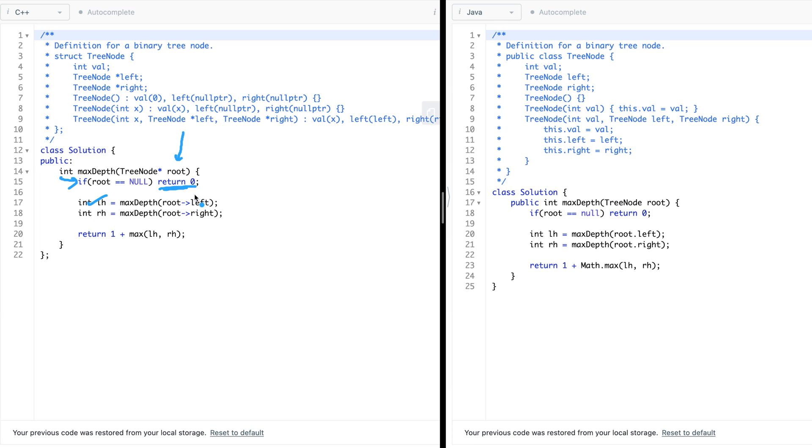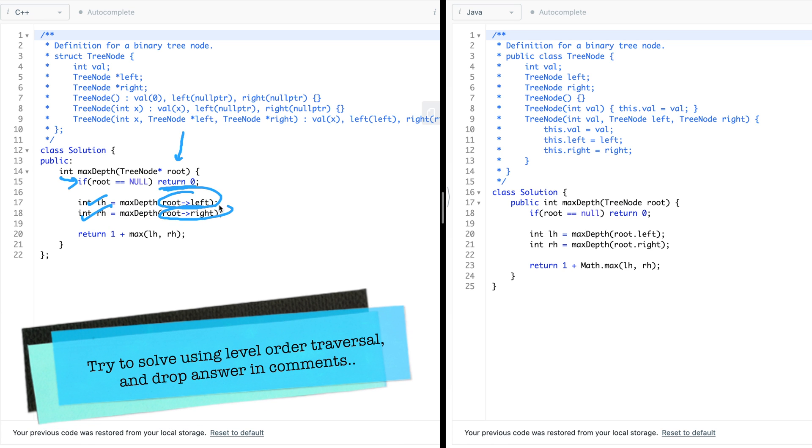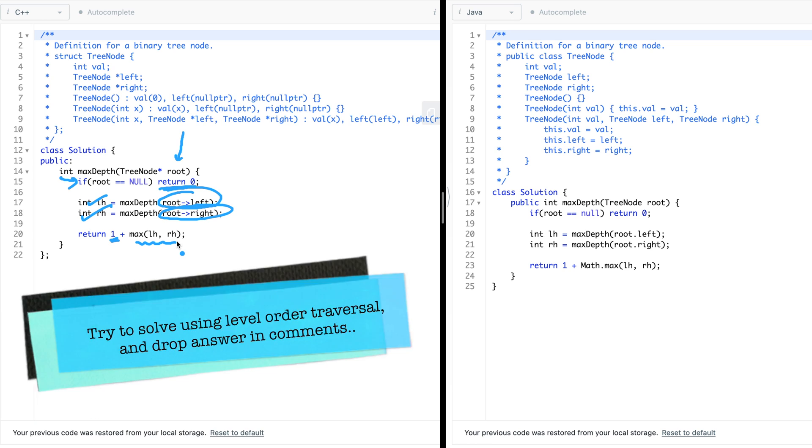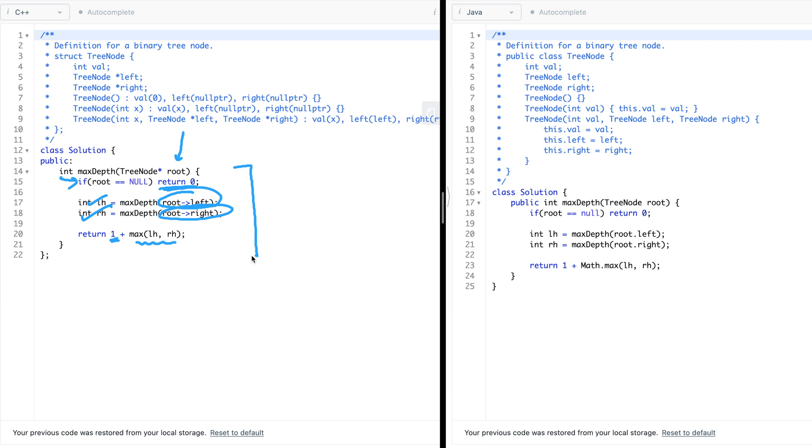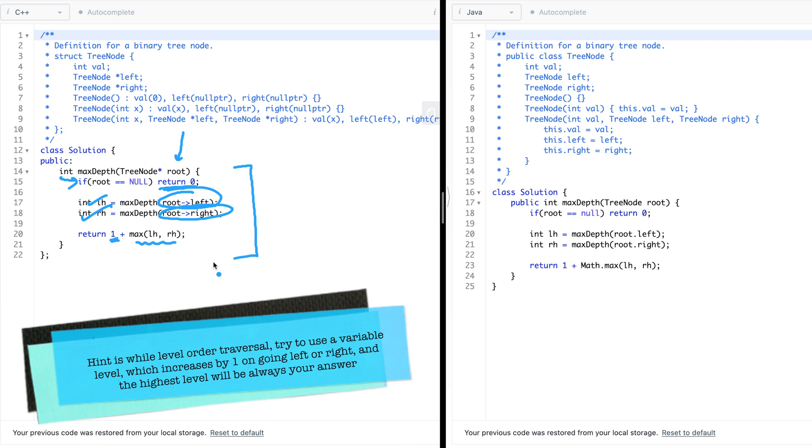I figure out the right height by going to the root right. And once I've figured that out, what I'll do is, 1 plus max of left height and right height. Simple as that. That's a simple recurrence that I've already shown you via the diagram.